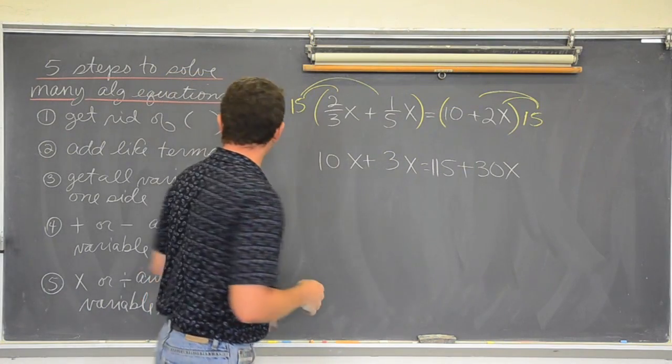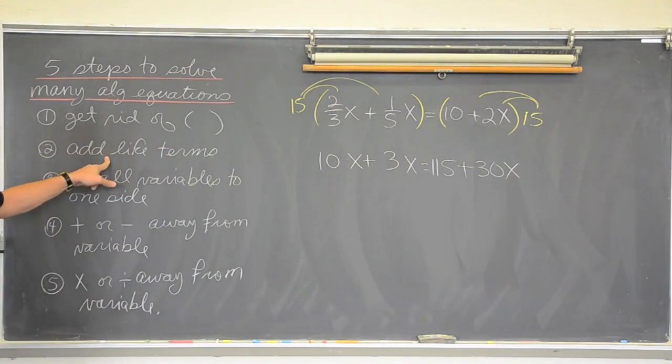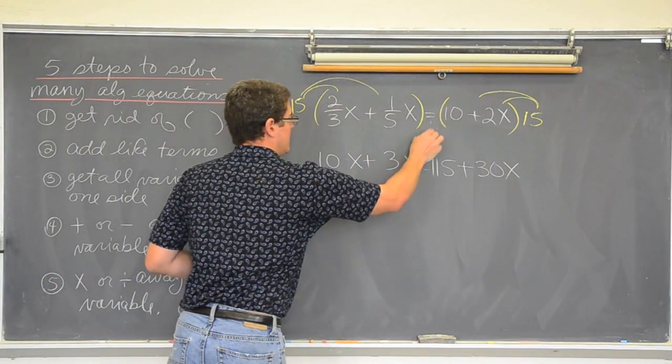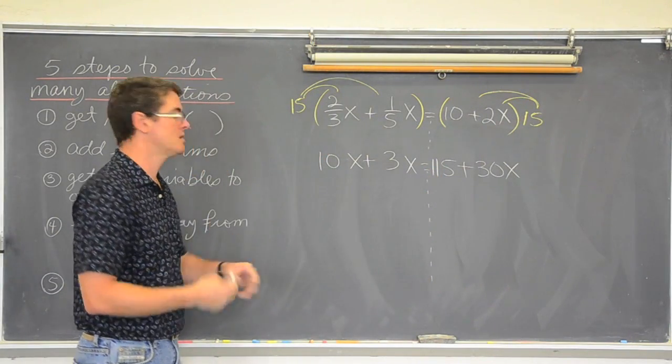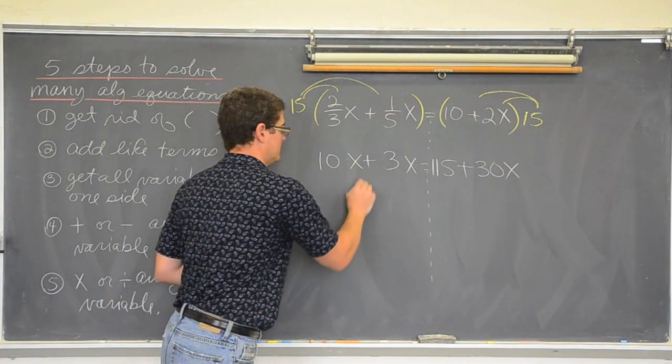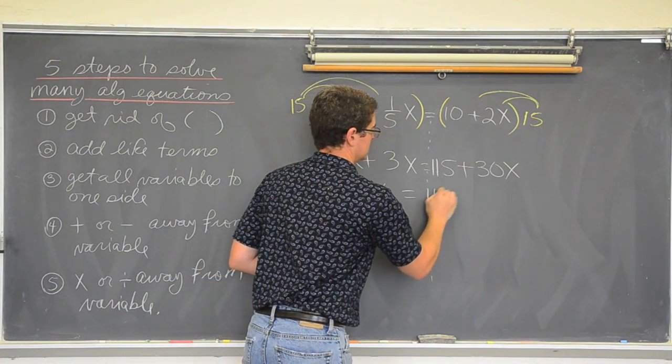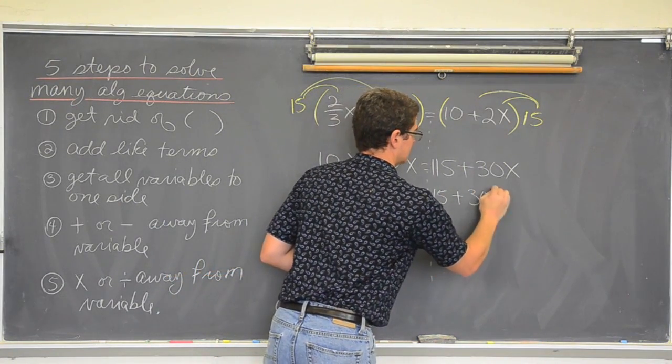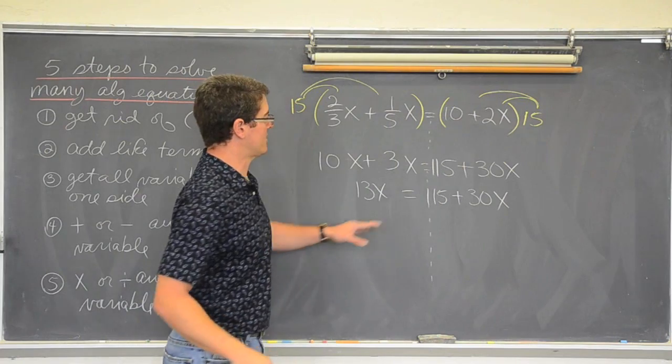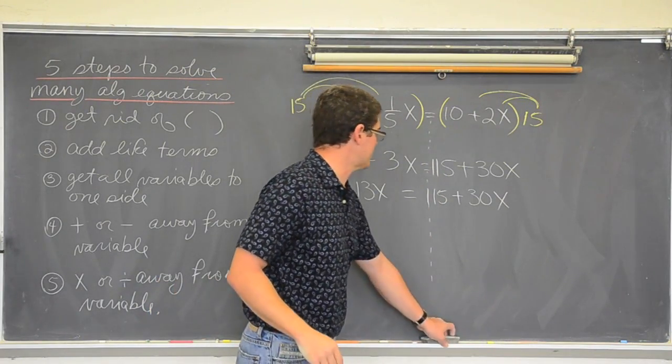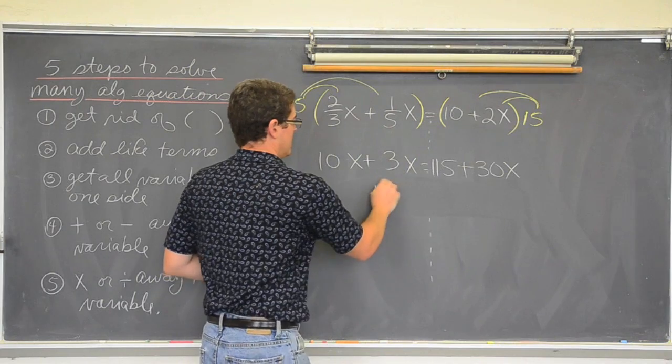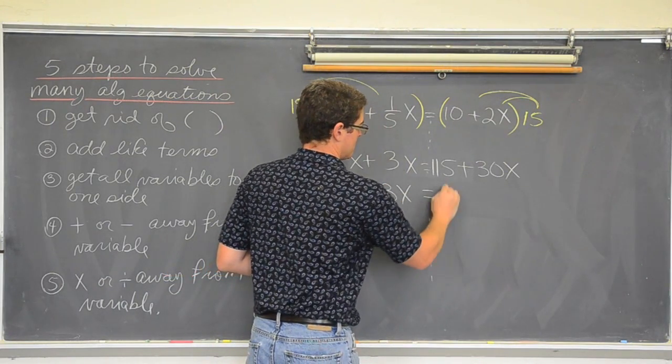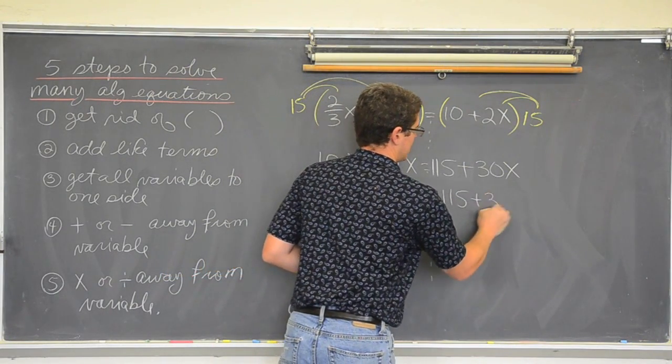So, I am going to add like terms. Because if I do have like terms on the same side of the equal sign, equal signs break an equation up into two parts. We have 10 and 3 is 13. 13x equals 150 plus 30x.